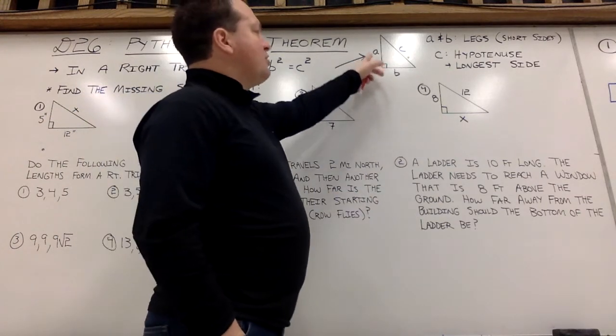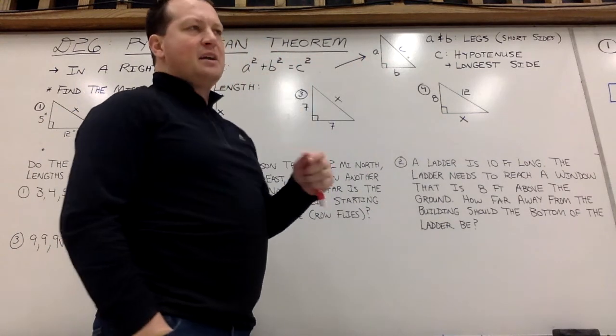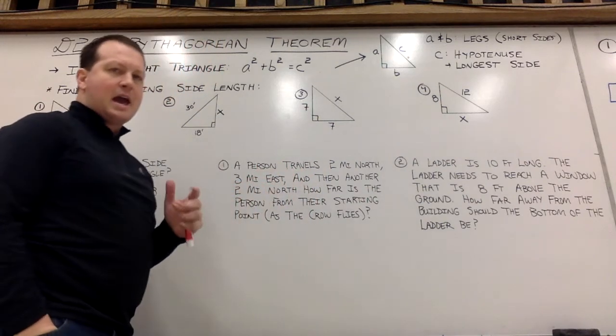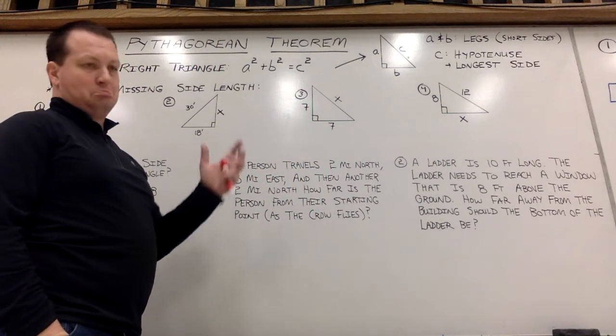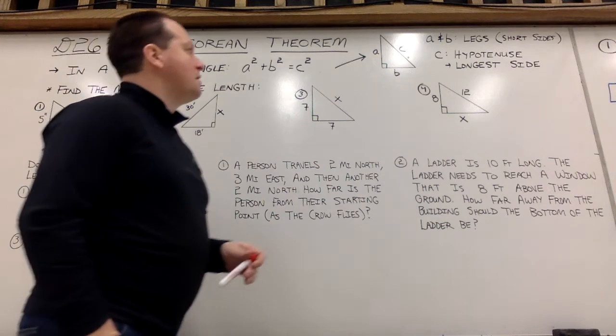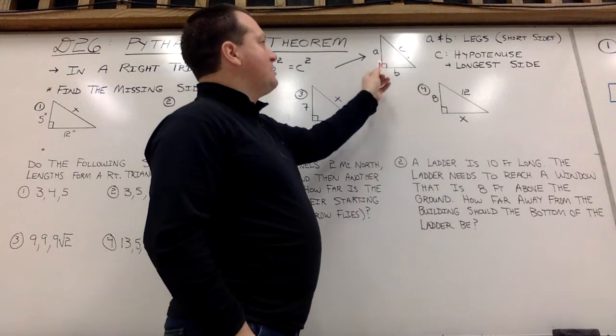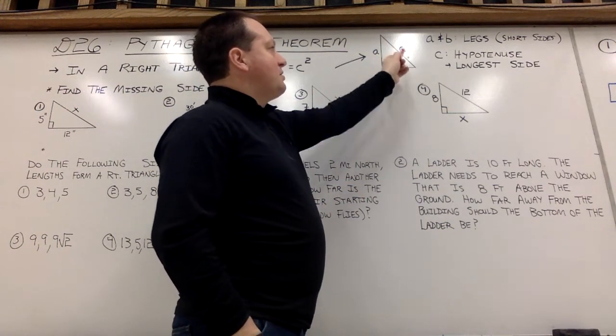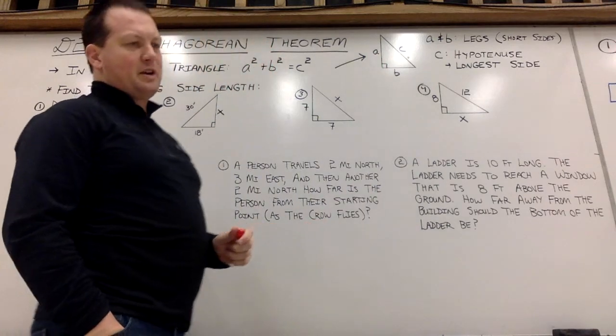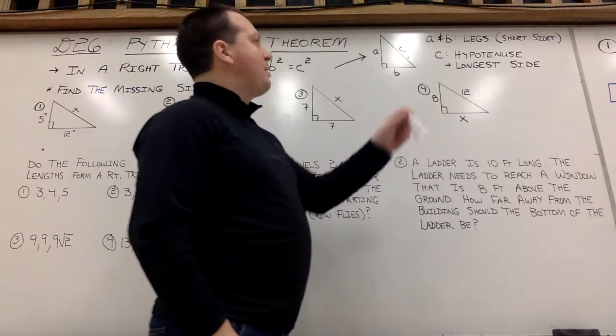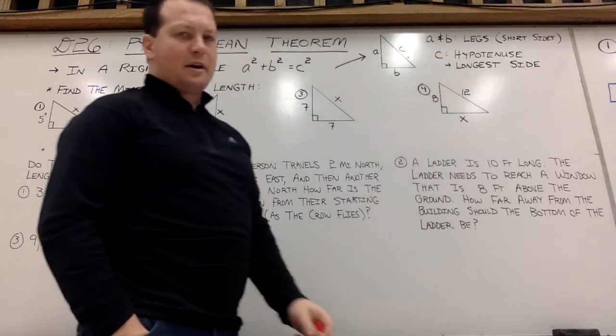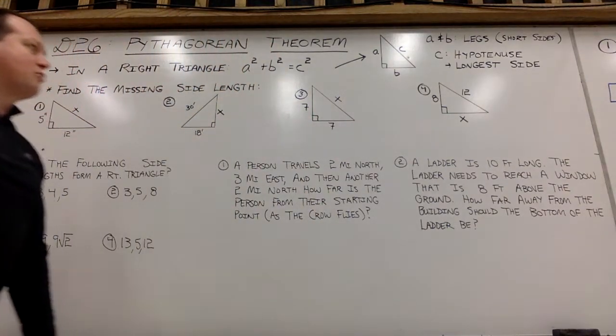a and b are interchangeable. a doesn't have to be the shortest leg. Side b does not have to be the longest. They can be either or. But side c is always diagonally across from that 90 degree right angle. That is known as the hypotenuse, and that is your longest side in a right triangle.